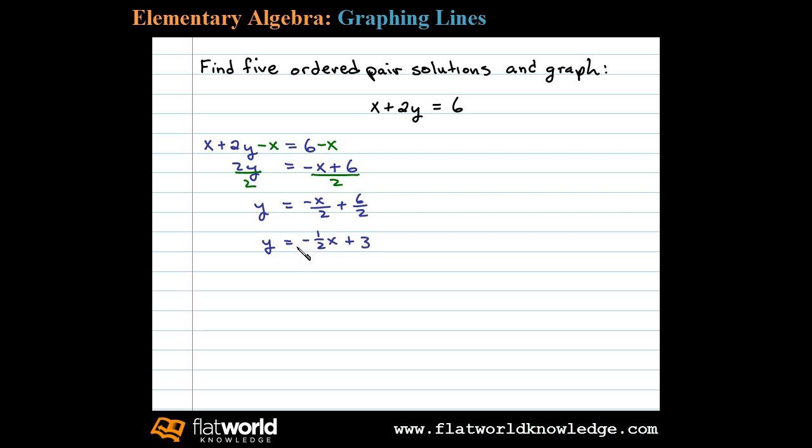We'll use this equivalent form of the original equation to determine five ordered pair solutions. Here we can see y depends on x, so we could choose any values for x and then find the corresponding y values. Let's choose wisely since the coefficient here is a fraction where the denominator is 2. I'm going to choose some x values where the x values are multiples of 2.